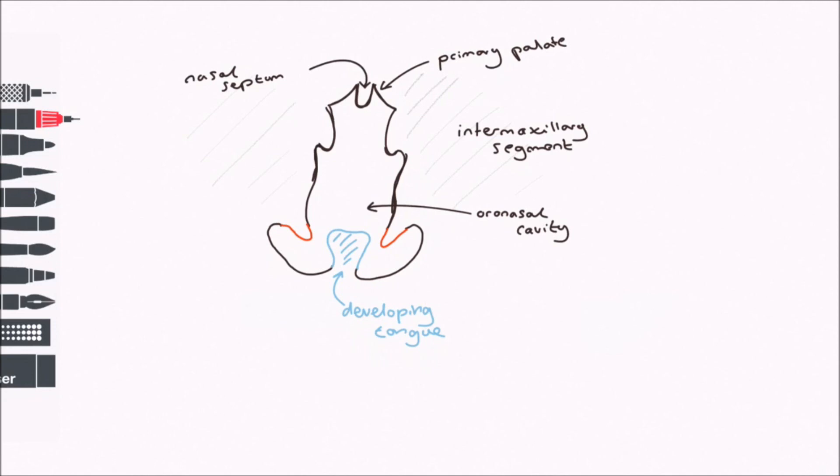The secondary palate develops as bilateral outgrowths called the palatal shelves. These grow inferiorly from the primary palate until the end of the ninth week when they rapidly lift up or elevate. At this point, they fuse along the midline to form the complete secondary palate. This is the hard palate or the roof of the mouth. The palatal shelves elevate very rapidly over minutes or hours as a matrix of hyaluronic acid accumulates within them.